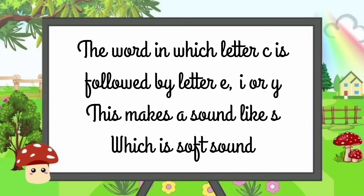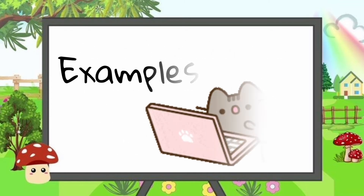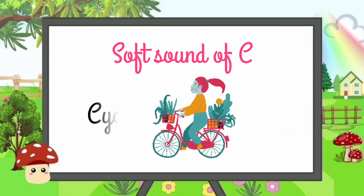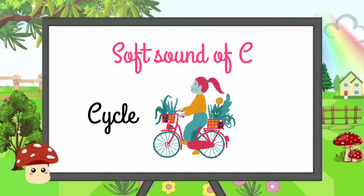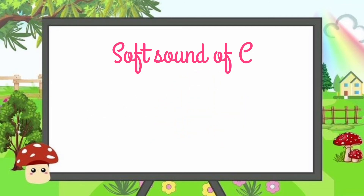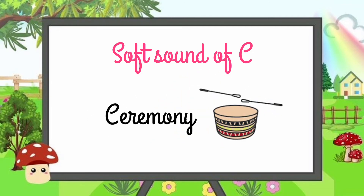The word in which letter C is followed by letter E, I, or Y makes a sound like S, which is the soft sound. Some examples are: cycle, circle, ceremony.